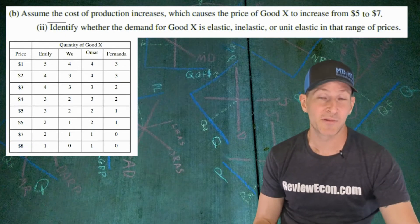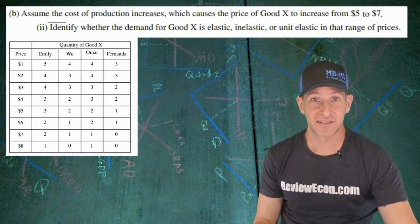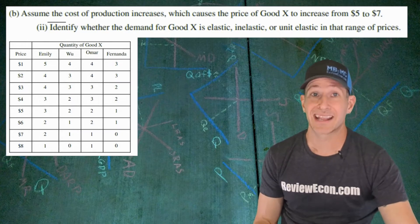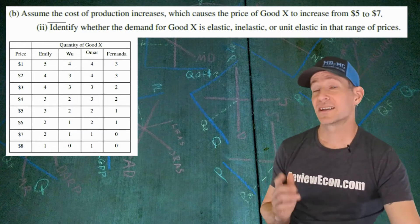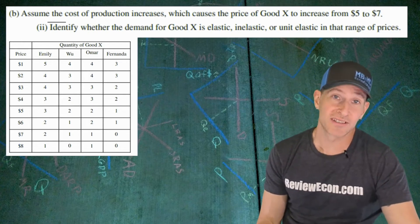When it comes to question BII, we have to identify if the coefficient we just calculated tells us that the demand curve is elastic, inelastic, or unit elastic in that price range. Now, there will be a consistency point here. So, if you calculated the coefficient incorrectly, you could still get this point.